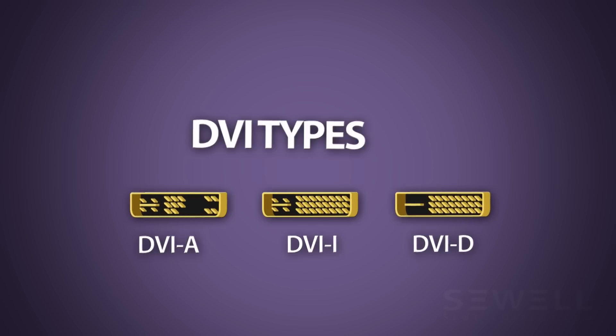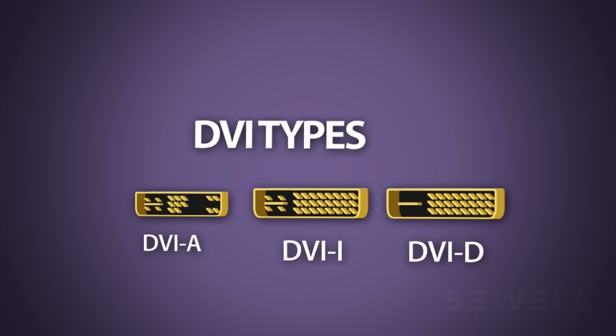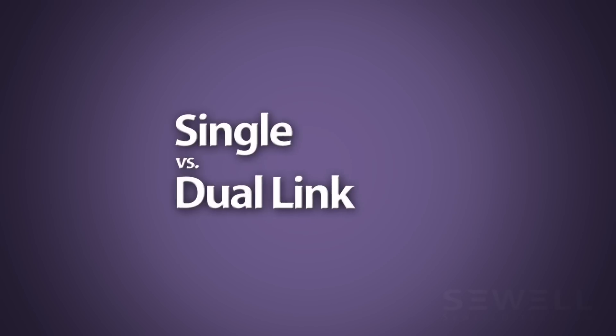DVI comes in three basic types: DVI-A, DVI-I, and DVI-D. Of these three, DVI-I and DVI-D can come in either single link or dual link versions.